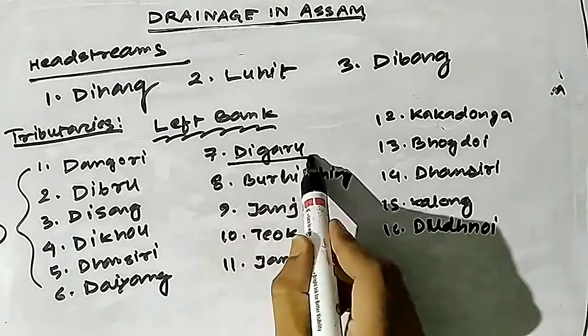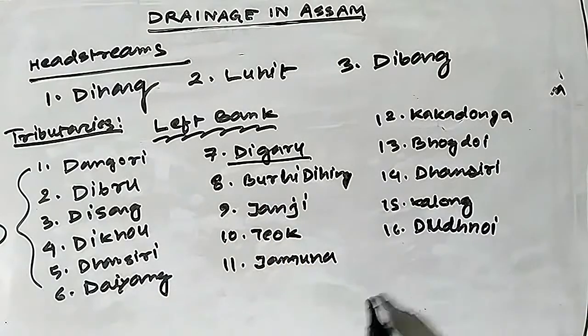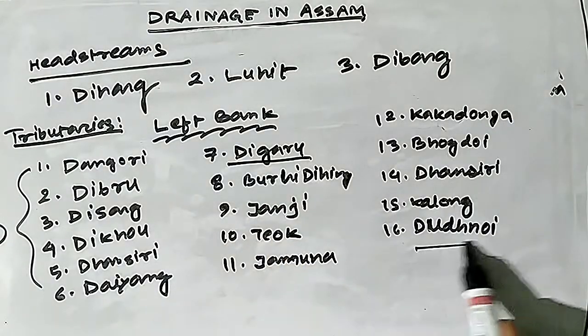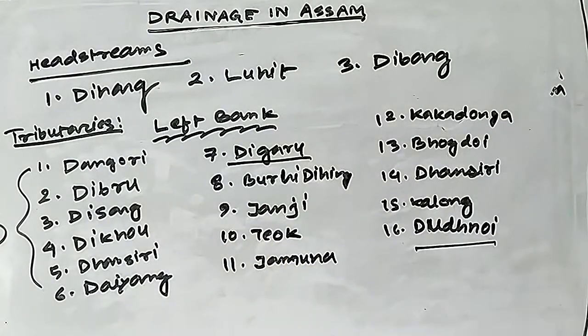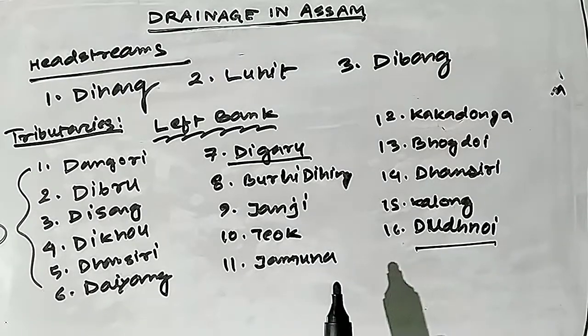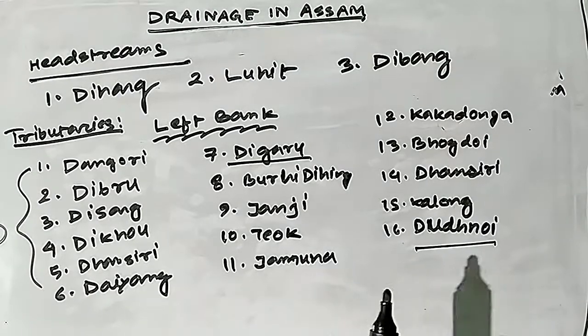A mnemonic trick to remember the left bank tributaries: Dunguri, Dibru, Dishang, Dikho, Dudnoy, Thansiri, Doyang — this is the trick to remember the left bank tributaries of the Brahmaputra.